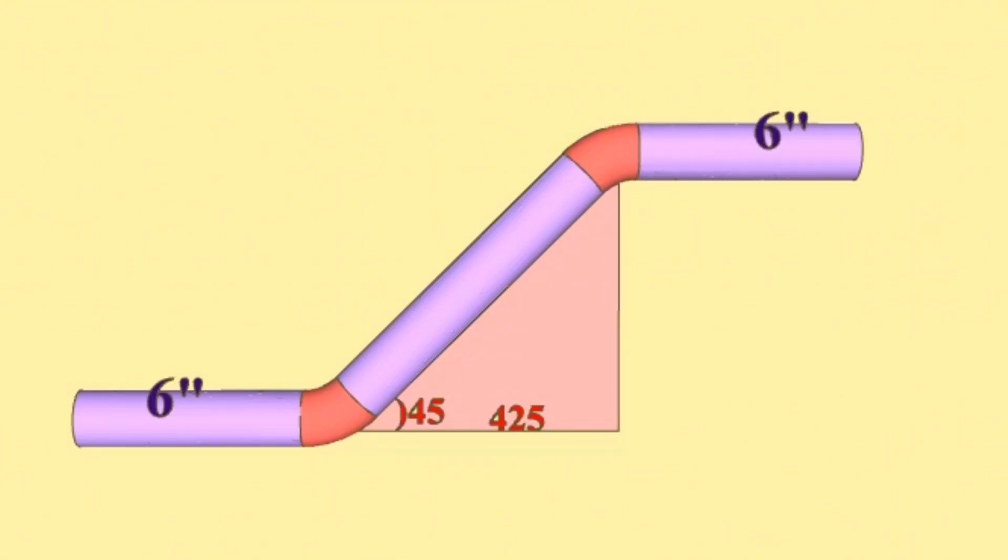As you see, the 6 inch pipeline comes horizontally, then goes up at a 45 degree angle and continues horizontally again at 45 degrees.